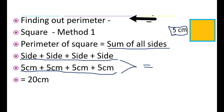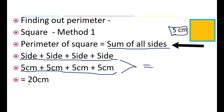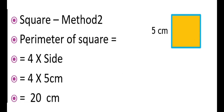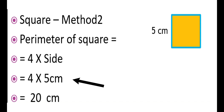Let's find out the perimeter of a square. Here, one side is equal to 5 cm. Method 1: the formula will be side plus side plus side plus side, that is 5 cm plus 5 cm plus 5 cm plus 5 cm. Method 2: we write 4 into side, that is 4 into 5 cm, which equals 20 cm.